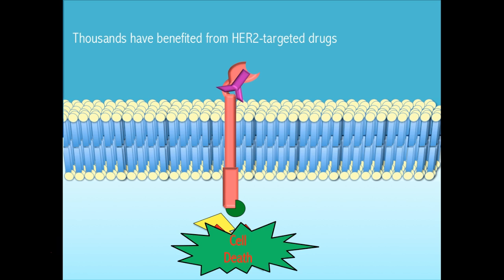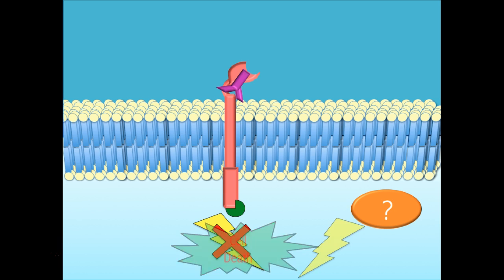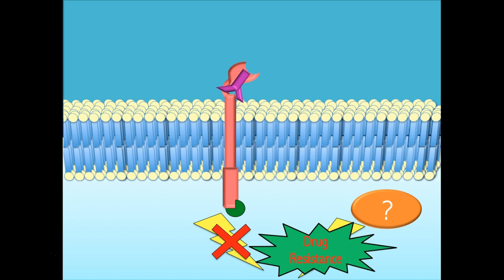Unfortunately for 90% of women with advanced disease, their cancers return because their cancer cells find alternative ways to grow and resist the effects of HER2 targeted drugs.